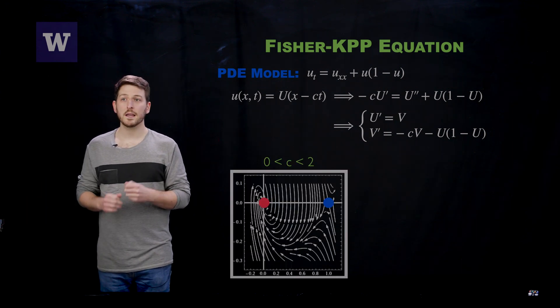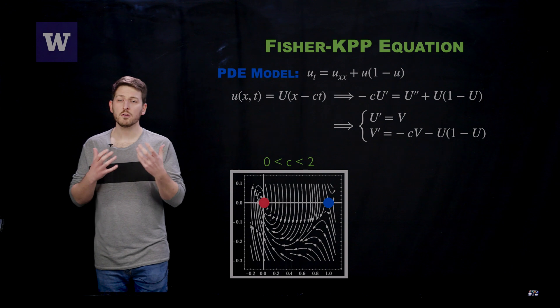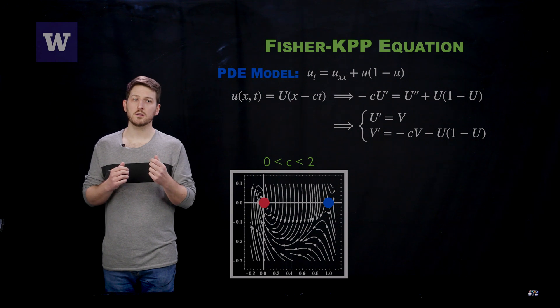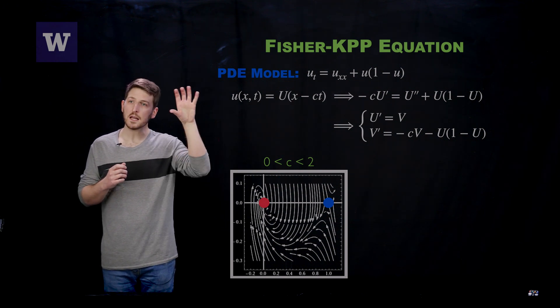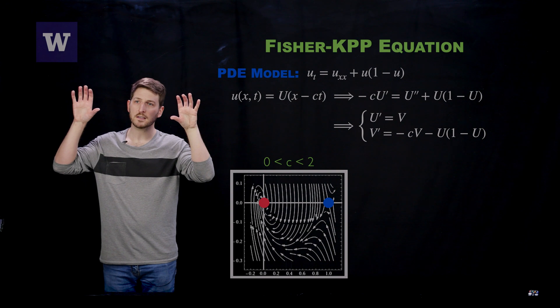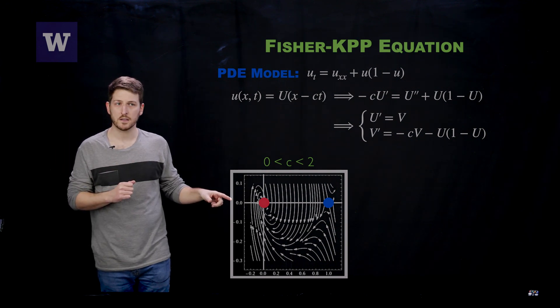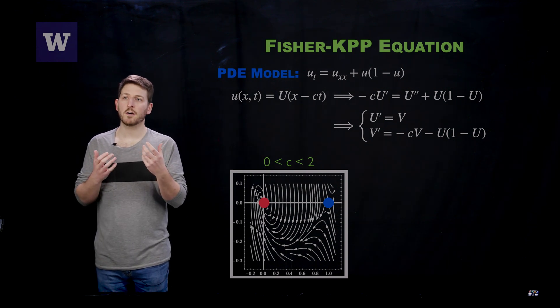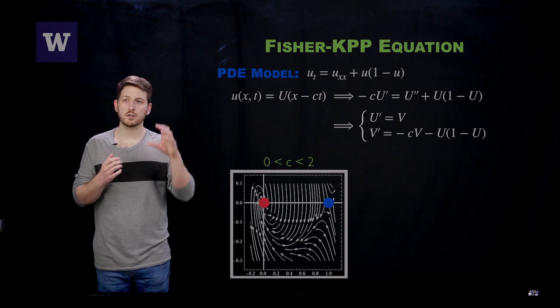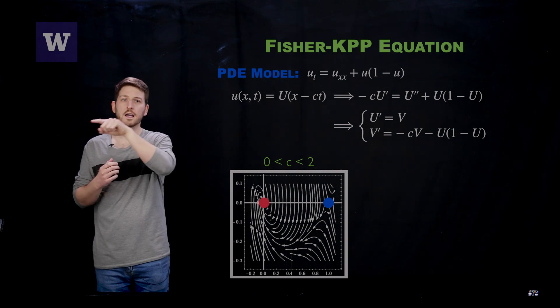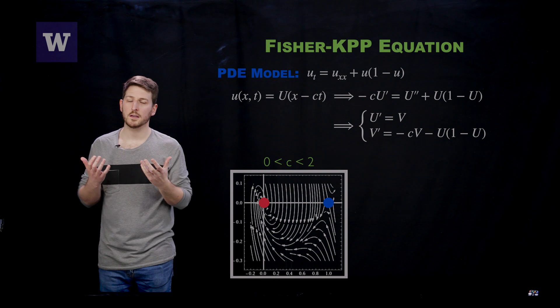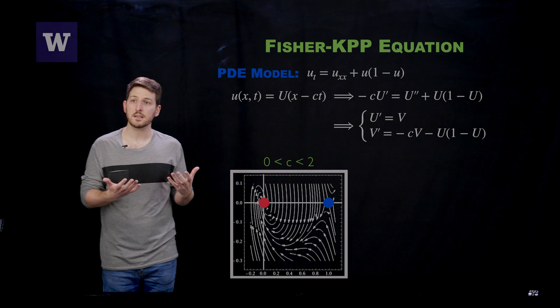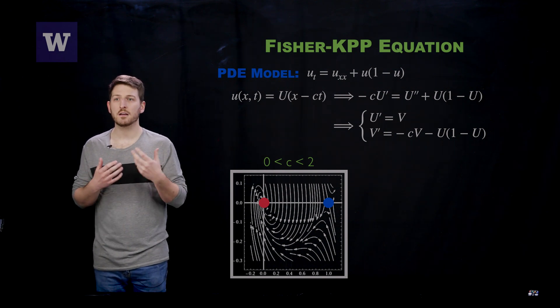In particular, in this vector field, those traveling wave solutions from the previous slide manifest themselves as heteroclinic connections between the stable blue state and the unstable red state, as you can see in this vector field right here. It's not hard to see that you should be able to find a trajectory that shoots off the blue state and eventually arrives at the red state. But the issue with this is that you are spiraling into the red state, and therefore, necessarily, your profile is going to take negative values.